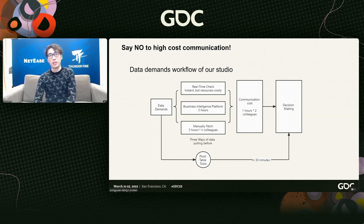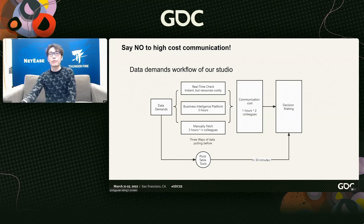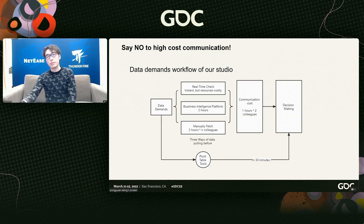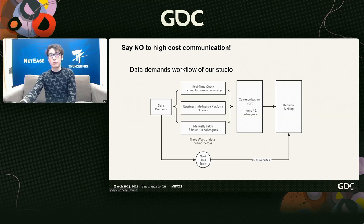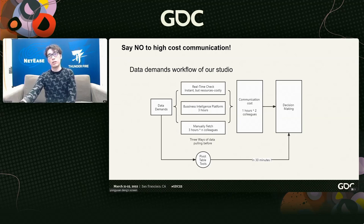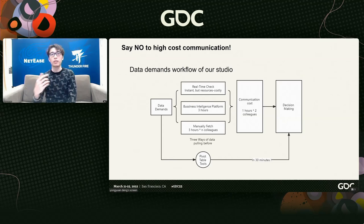Here's a diagram showing how data demands worked before our tool shipped. Normally there are three ways to handle a data demand in our studio. First is developing a real-time monitoring dashboard, but it costs significant development resources. Second, we have a business intelligence platform where designers can raise demands for a stable dashboard. Third, designers can directly raise demands to a specific engineer, where a data product manager helps clarify the designer's requirements into SQL queries. The communication cost for this process is high.